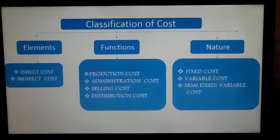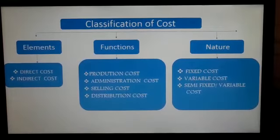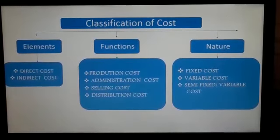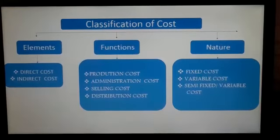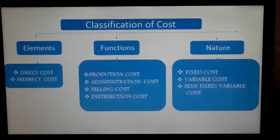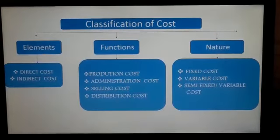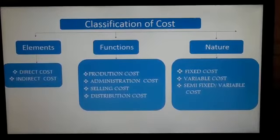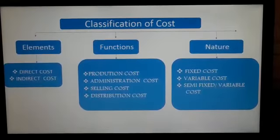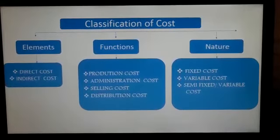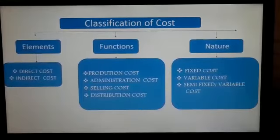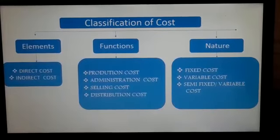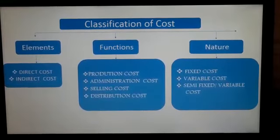The first one is production cost — it is the cost incurred for the production purpose, that is converting raw material into your finished product. The second one is administration cost — the cost incurred for meeting administrative functions like planning, organizing, staffing, directing, and controlling.